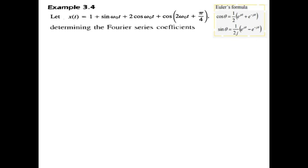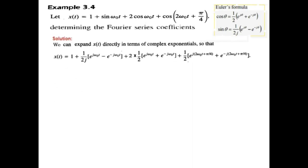So the first thing we need to do is convert them into exponential form by using the Euler equation. Just following this formula, we convert the sine function 2 times cosine, cosine formula and similarly cos 2 omega t plus pi by 4.